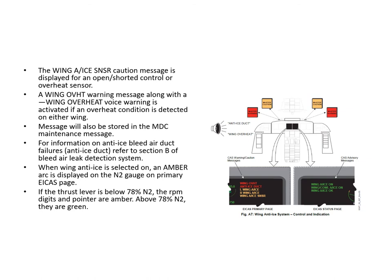When wing anti-ice is selected on, an amber arc is displayed on the N2 primary gauge. This indicates to the crew that if N2 is in that range there may be insufficient air pressure. Below 78% N2 the digits and pointer are amber; above 78% they are green. It's a warning that at low engine RPM there may not be sufficient bleed air pressure for the anti-ice system to work properly.